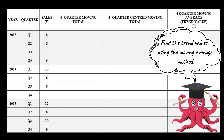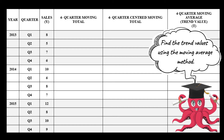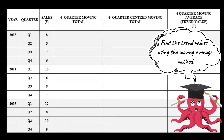A moving average consists of a series of averages, where each average is the mean value of the time series over a fixed interval of time. Using this method, the trend obtained will be non-linear. The following example shows the time period as quarters, where the year has been divided into four quarters. In this case, if we are using the moving averages method to compute the trends, then we should compute the trends as a series of four quarter moving average.